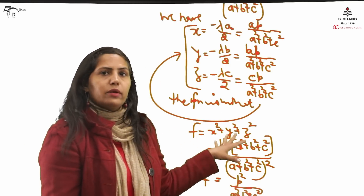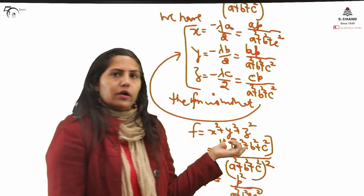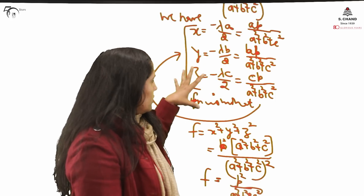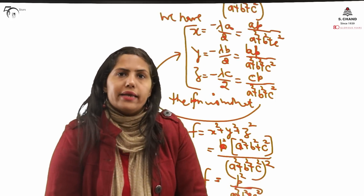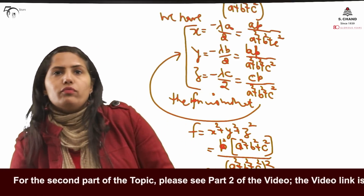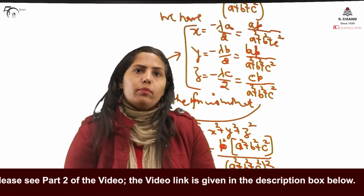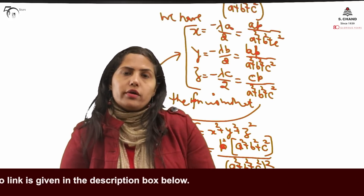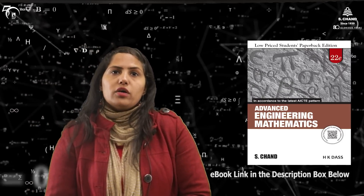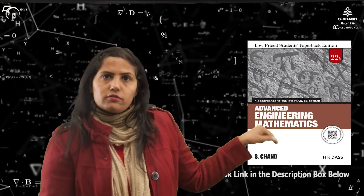This is how we apply the Lagrange method, and this is the end of Part 1. I took one problem which was the basic problem. In Part 2, I will be taking one real-life based problem and show how the Lagrange method is helpful for solving a real-life maxima-minima problem based on a condition. If you want to study this method, you can refer to the book by S.Chan Publishing. The e-book link is given in the description box below.